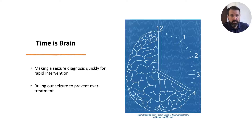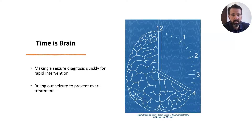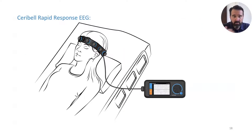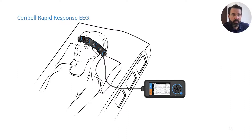Time is brain. Making the seizure diagnosis quickly — well-validated now based on Lowenstein's early literature — is important. It also helps, by ruling out seizures, to prevent over-treatment of patients that don't need it. And hence came this technology that I often use in my ICUs today — Cerebell Rapid Response EEG — developed here in the San Francisco Bay Area.